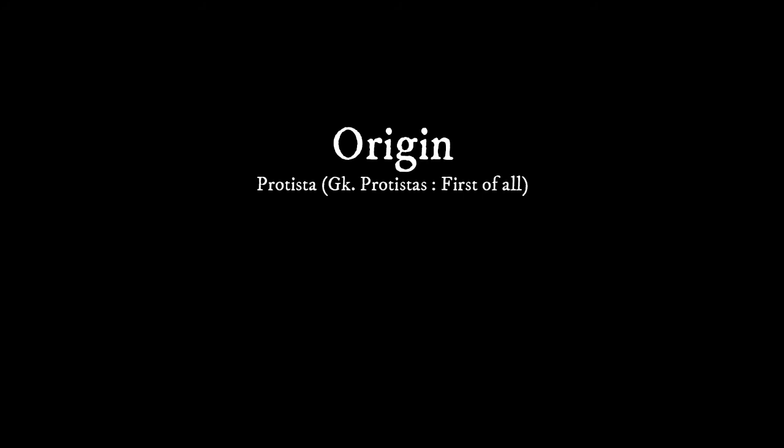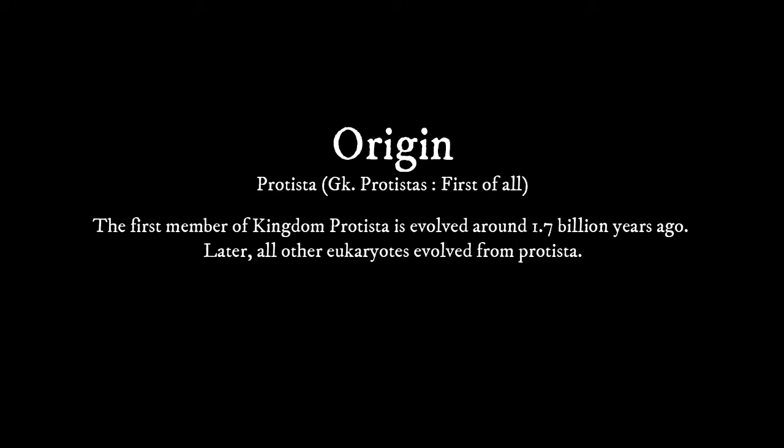The next topic is the origin of Kingdom Protista. The word 'Protesta' means 'first of all' — these were the organisms that first appeared after the Big Bang. The first members of Kingdom Protesta evolved around 1.7 billion years ago, and most of our eukaryotes originated from the Protista kingdom.